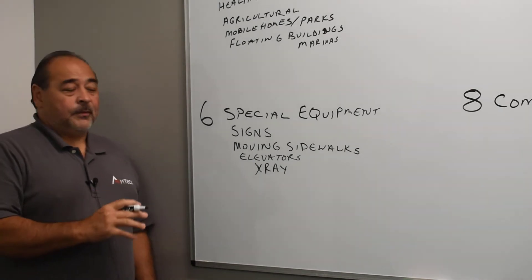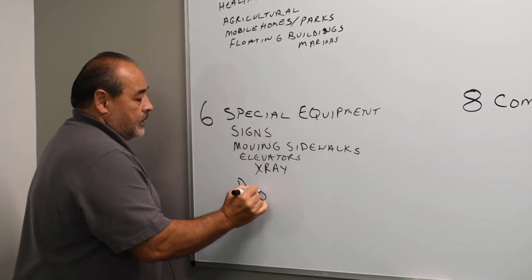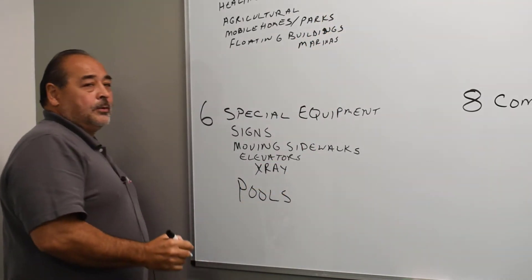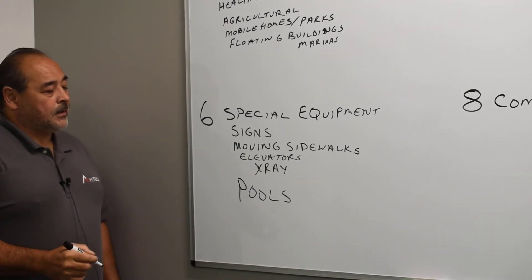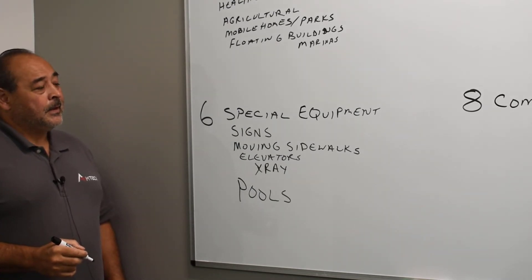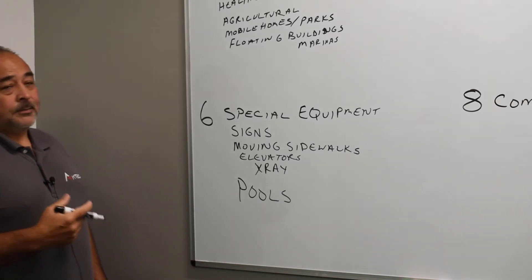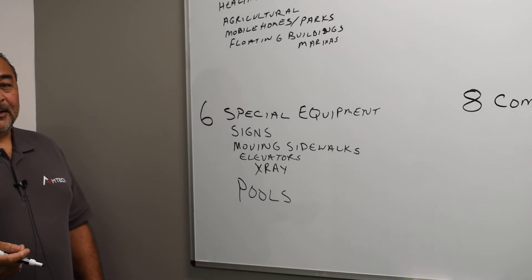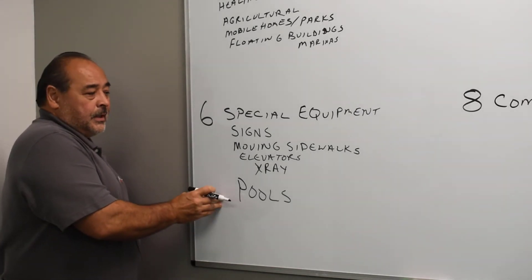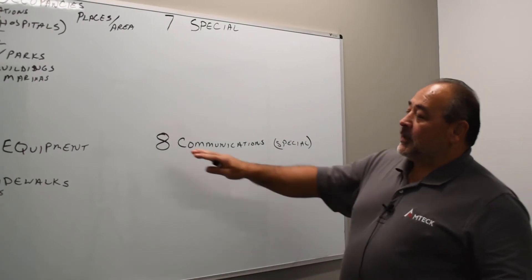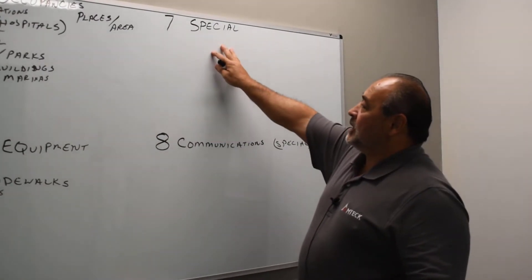Another thing that gets people confused because in chapter five we talk about places or areas. It kind of gets you confused because pools aren't special equipment. But you got to realize, electrically speaking, a pool is just electrical equipment hooked to a big body of water. So you got to realize the pool itself might be a place or an area, but the electrical stuff associated with that pool is just electrical equipment. And moving past six, which was special equipment, we're going to move over here to chapter seven.